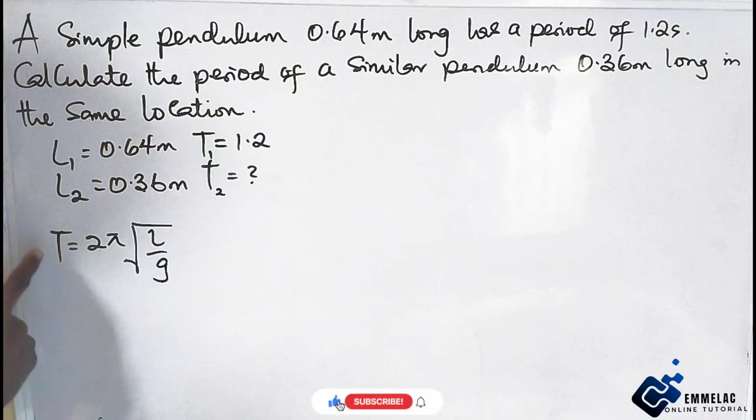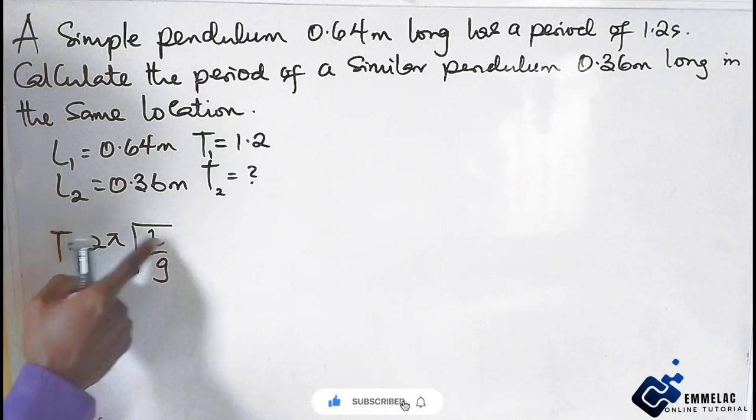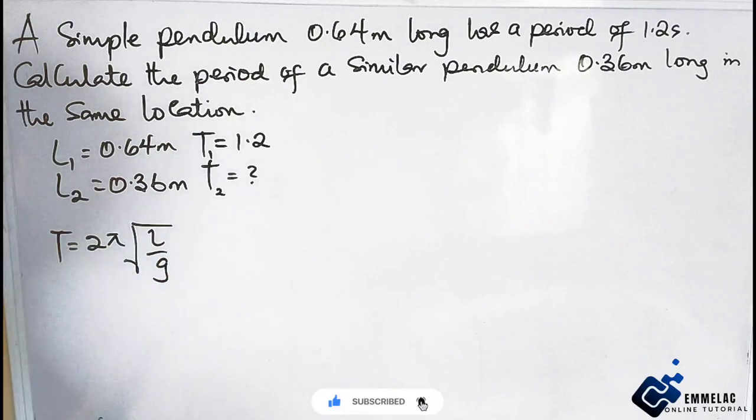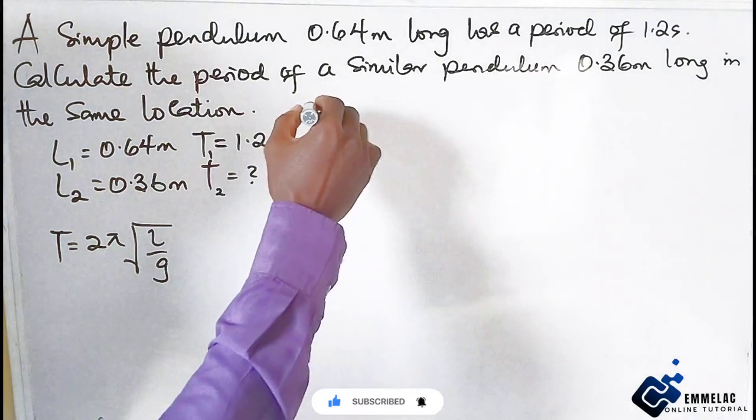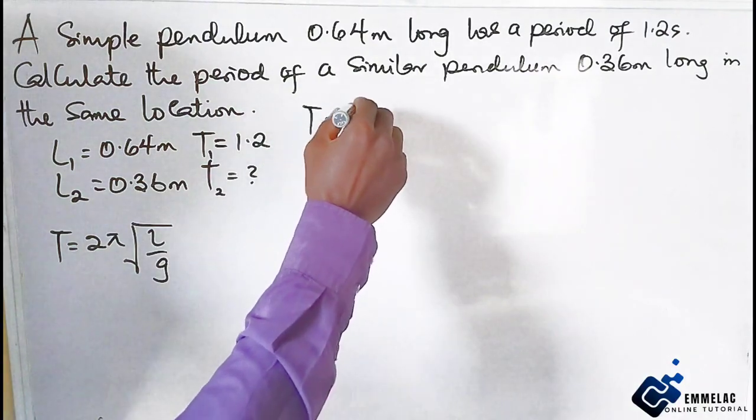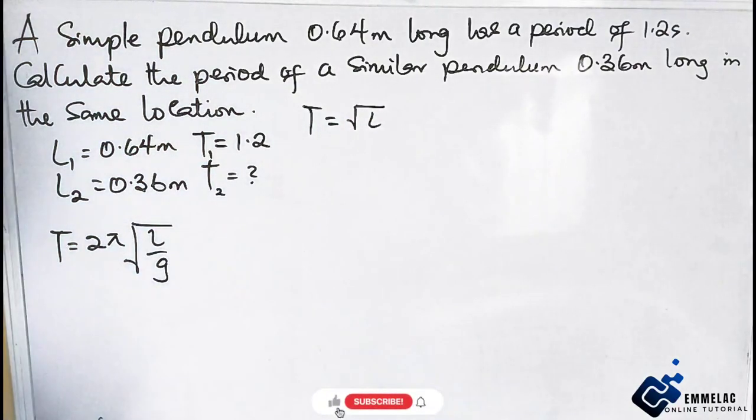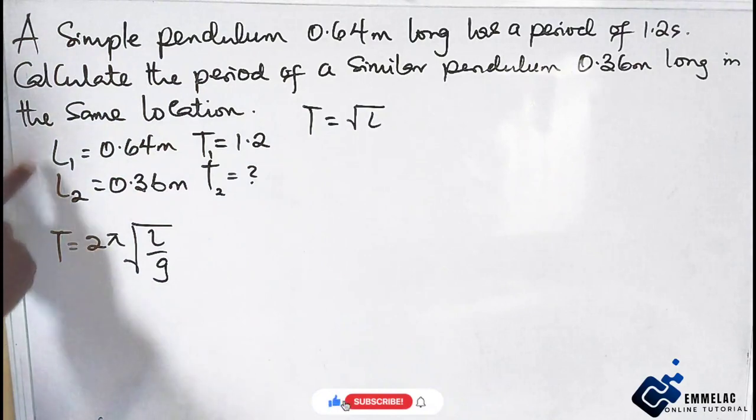If we look at this, you can see that the period is proportional to the square root of the length. So T is proportional to the square root of L. Now since we are having a proportionality here, T1, T2.